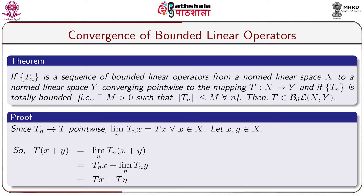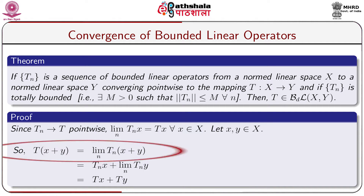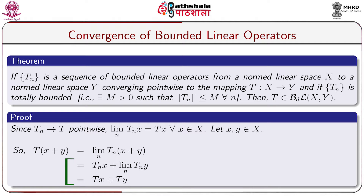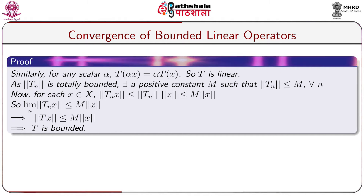Proof: Since T_n converges to T pointwise, limit of T_n(x) = T(x) for all x in X. To show T is linear, for x, y in X: T(x + y) = limit of T_n(x + y) = limit of T_n(x) + limit of T_n(y) = T(x) + T(y). Similarly, for any scalar α in F, T(αx) = αT(x). So T is linear.